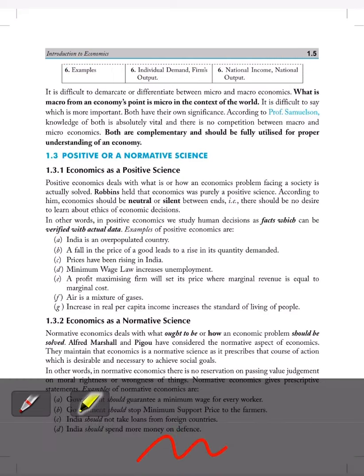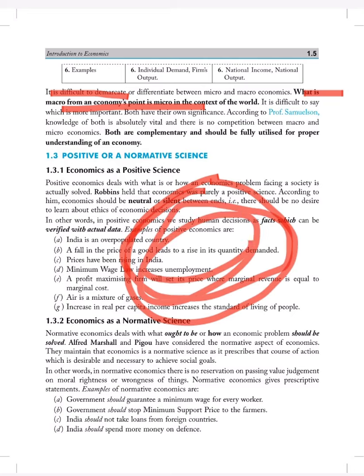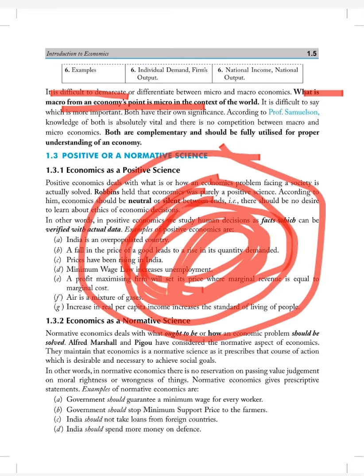Moving further, it is difficult to discriminate or differentiate between macro and macroeconomics. What is macro from an economic point is micro in the concept of the world. Suppose we are discussing only about India, all the states of India, it will become macroeconomics. But when we come to the whole, means when we treat as a world, that particular part is called as microeconomics.